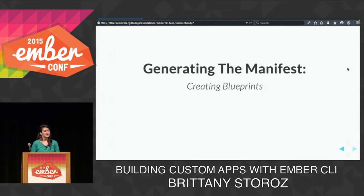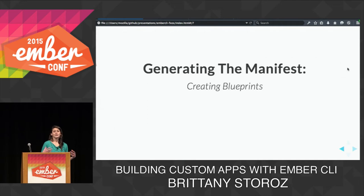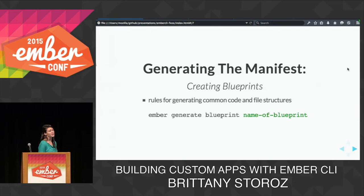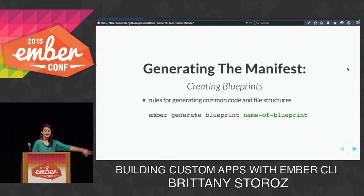Our first requirement was to create a manifest file, so we need Ember CLI to generate this file for us. We're going to create blueprints to do this. Blueprints are basically just rules for generating common code and file structures. In the context of an add-on, there's a concept of a default blueprint — if you name your blueprint the same as your add-on, Ember CLI will install whatever files you specify as soon as the user installs your add-on.